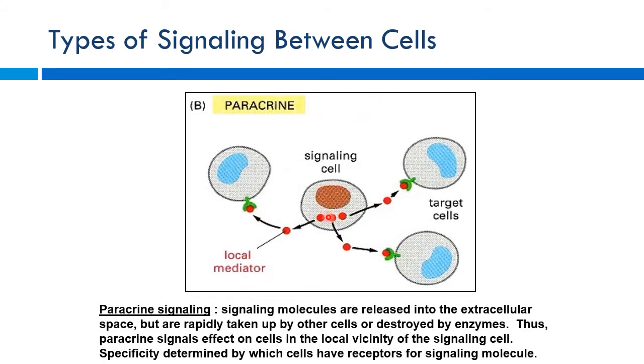Paracrine signaling involves a signaling cell releasing some sort of mediator. This usually occurs pretty close within the same tissue, with that mediator communicating with neighboring cells.